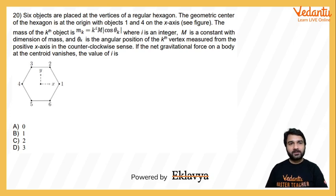Six objects are placed at vertices of a regular hexagon. The geometric center of hexagon is at the origin with objects 1 and 4 on the x-axis. This means object 1 and object 4 are presented on the x-axis.